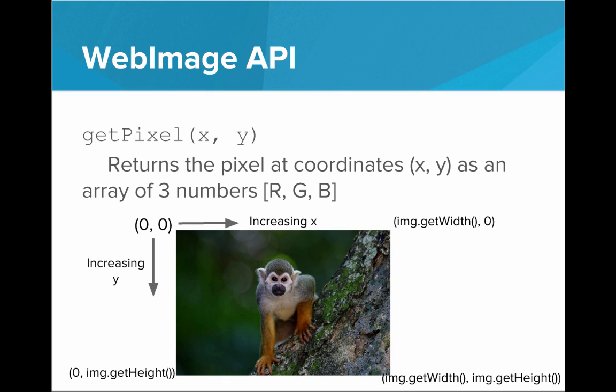It's important to note that the image has its own coordinate system. The upper left corner of the image is (0, 0) — if I called getPixel(0, 0), I would be getting that pixel in the upper left corner. We have increasing x to the right and increasing y down, just like on the graphics window. That means the upper right corner is image.getWidth for x and 0 for y, the bottom left is 0 for x and image.getHeight for y, and the bottom right corner is image.getWidth, image.getHeight.